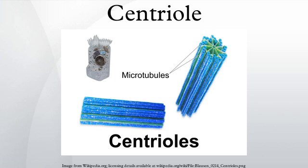Edouard Van Beneden and Theodore Boveri made the first observation and identification of centrioles in 1883 and 1888 respectively, while the pattern of centriole duplication was first worked out independently by Etienne de Harven and Joseph G. Gaulle circa 1950.